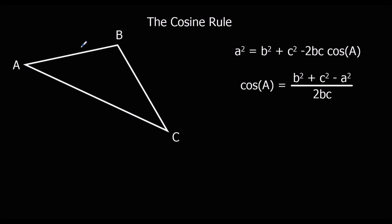The cosine rule tells us a missing length if we know two lengths and the angle in between them. So if I know this length, this angle, and this length, I can work out the missing one. So I can work out a missing length when I know two lengths and the angle in between them, or I could find a missing angle when I know all three sides.